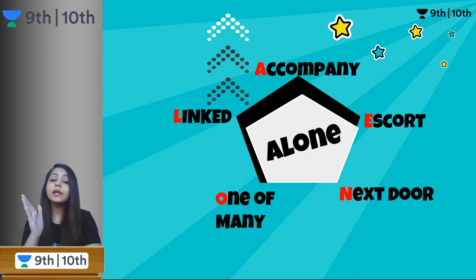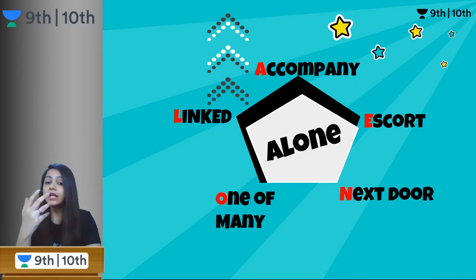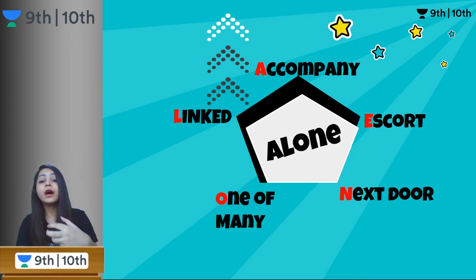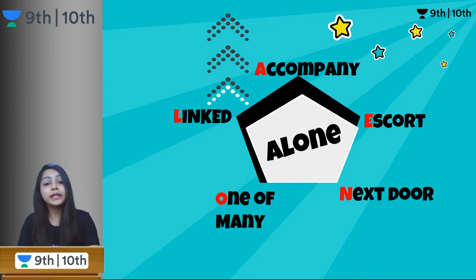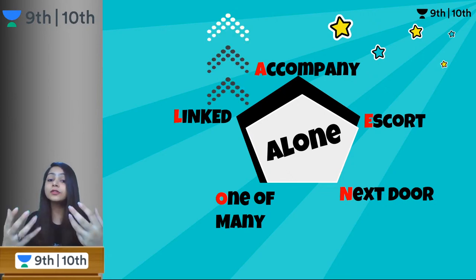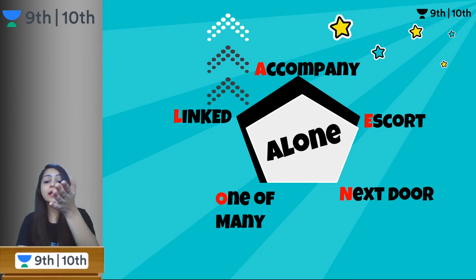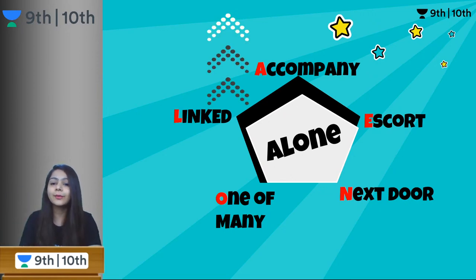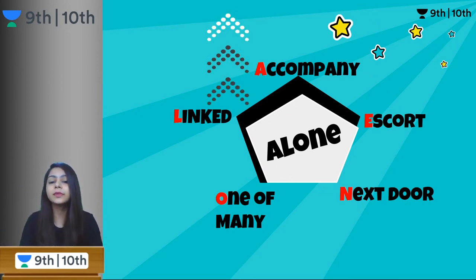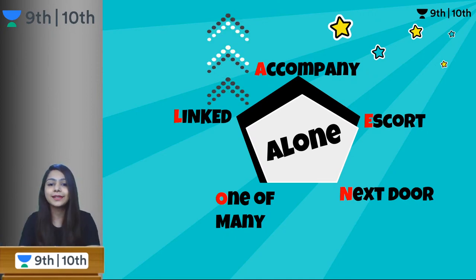L for linked — when you are linked along with someone, you will not be alone. O for one of many — when you are one of many in a group, that also means you are not alone. N for next door — when somebody lives next door to you, why do you have to feel alone? And E for escorted — when you are escorted by somebody to a place, you don't have to go there alone.